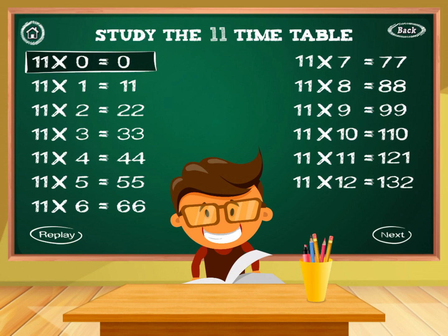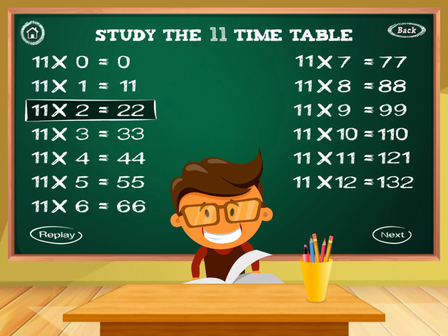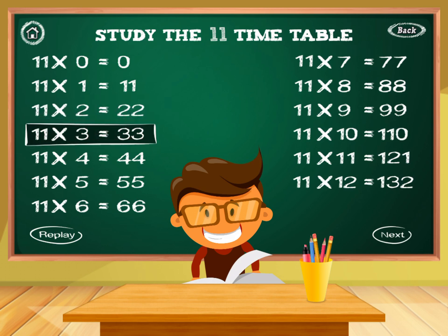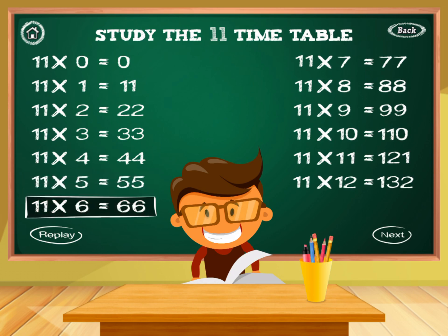11 times 0 equals 0. 11 times 1 equals 11. 11 times 2 equals 22. 11 times 3 equals 33. 11 times 4 equals 44. 11 times 5 equals 55. 11 times 6 equals 66.